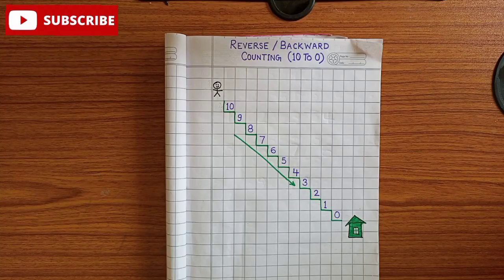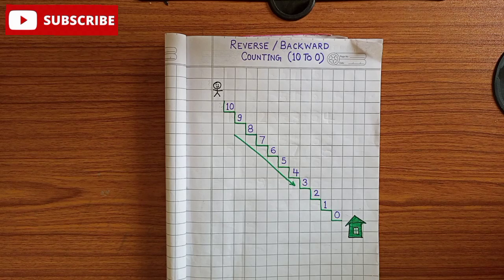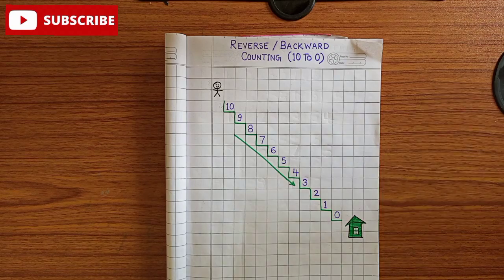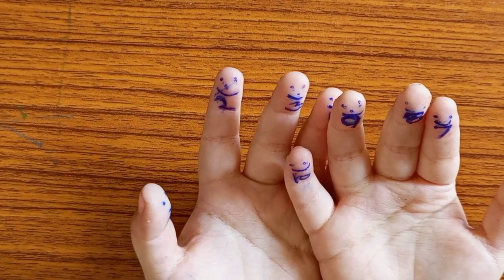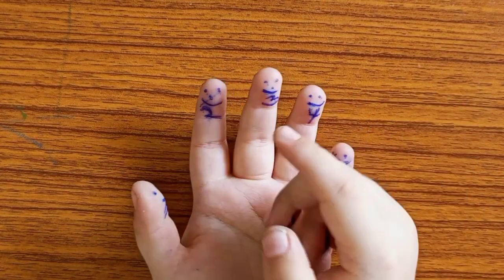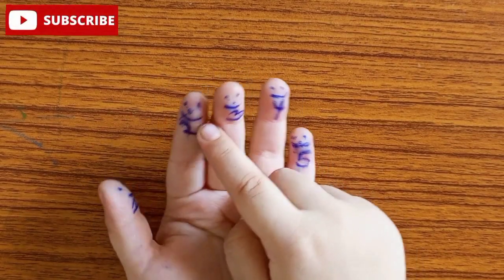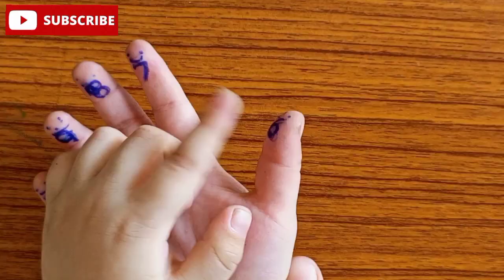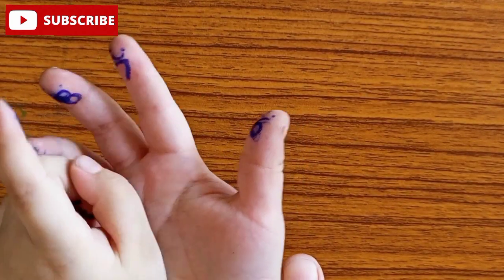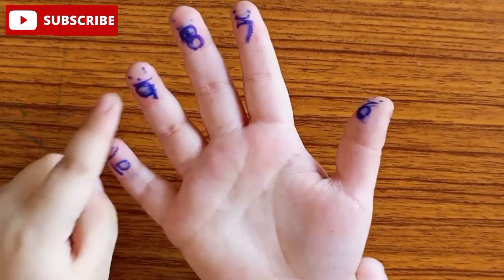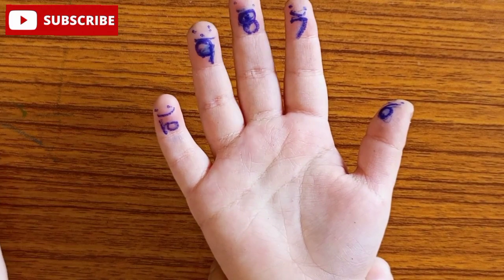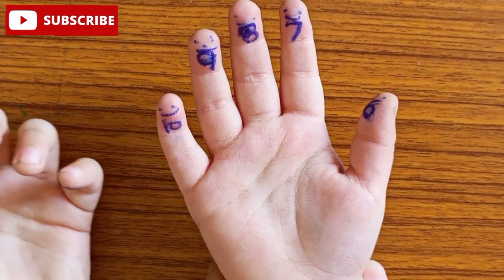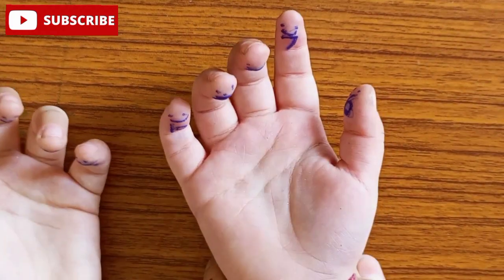Now, we will learn reverse counting in a practical way. Okay, Arav, how many fingers on your hands? 1, 2, 3, 4, 5, 6, 7, 8, 9, 10. How many fingers? 10 fingers. Very good.